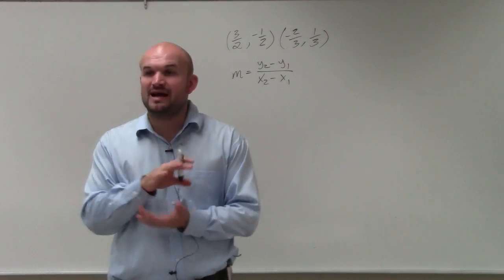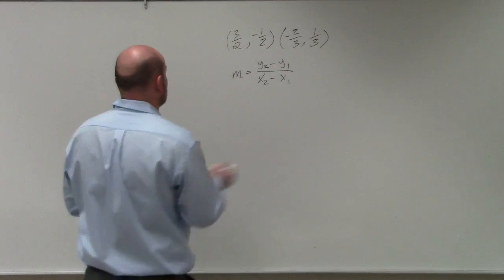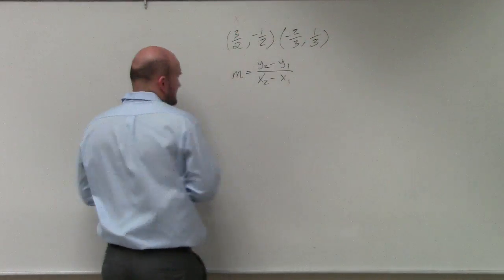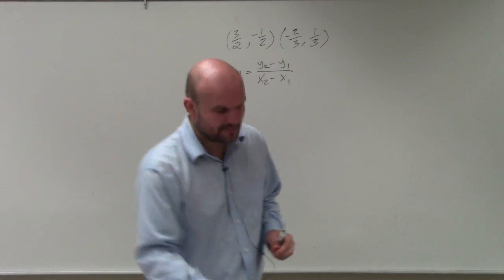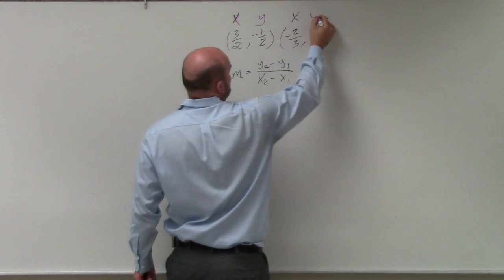So basically, what we have is we're identifying our points. One thing that you can do is label the points. So that is an x and y coordinate. Here's an x and y coordinate, and here's an x and y coordinate.